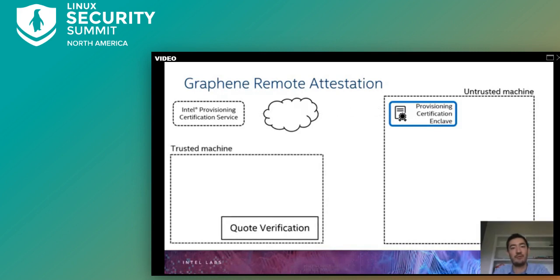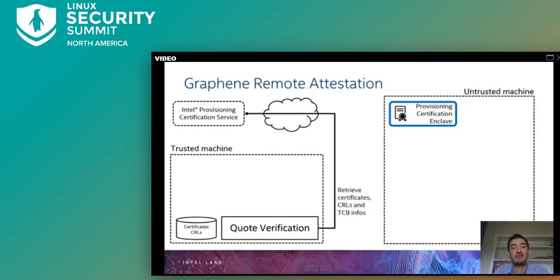When the user wants to run an enclavized application with a security-sensitive workload, the user must first contact the Intel Provisioning Certification Service to retrieve required certificates, certificate revocation lists, and other SGX-identifying information. This information can be cached locally so that the user doesn't need an internet connection to the Provisioning Certification Service every time she runs a workload on a remote, untrusted machine. The user also installs quote verification software that runs all required checks during remote attestation.